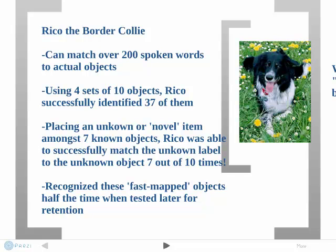Furthermore, when tested for retention, Rico recognized fast-mapped objects' labels over half the time, which is consistent with the learning abilities of young children around the age of three.